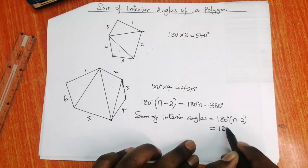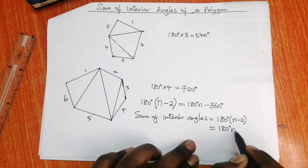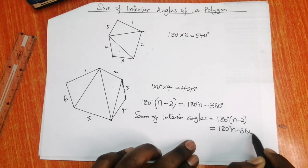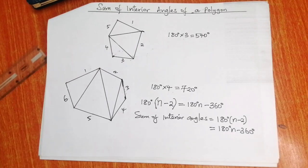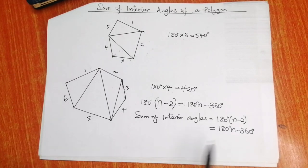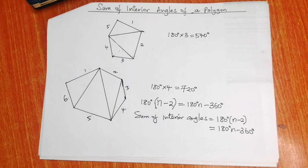This can be simplified to 180n minus 360 degrees. I advise you not to cram this formula, but to understand the concept. And that is how we find the sum of interior angles of any given polygon.